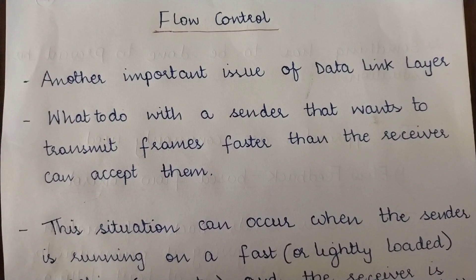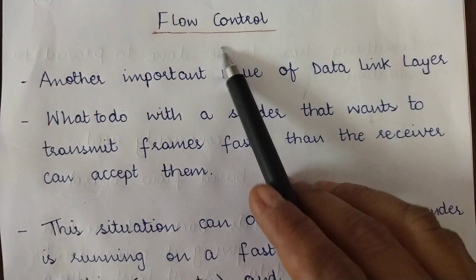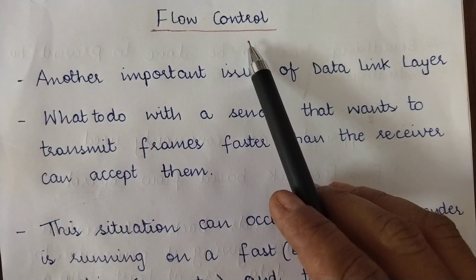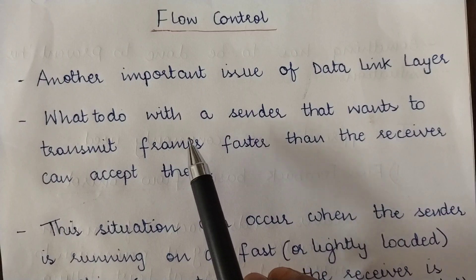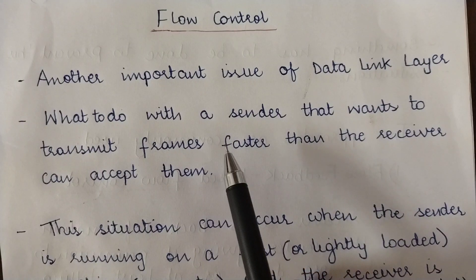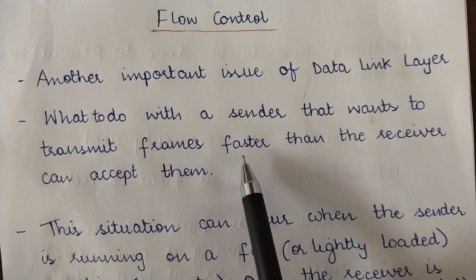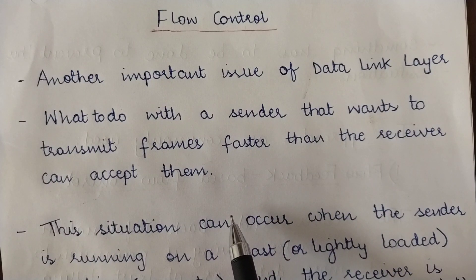Today we are going to study yet another design issue of the data link layer, which is flow control. Flow control is another function of the data link layer. Basically, it deals with a situation wherein a sender wants to transmit frames at a rate faster than the receiver can accept them.